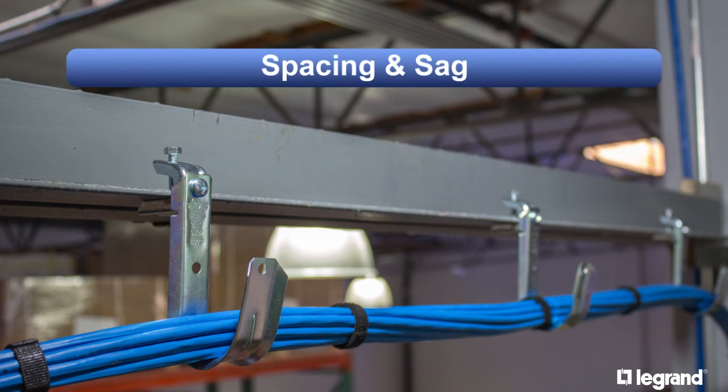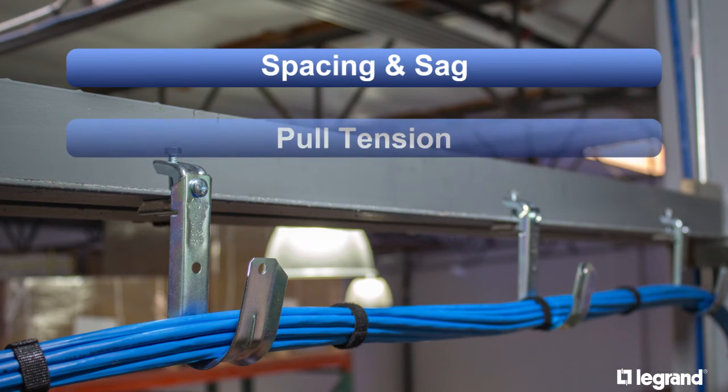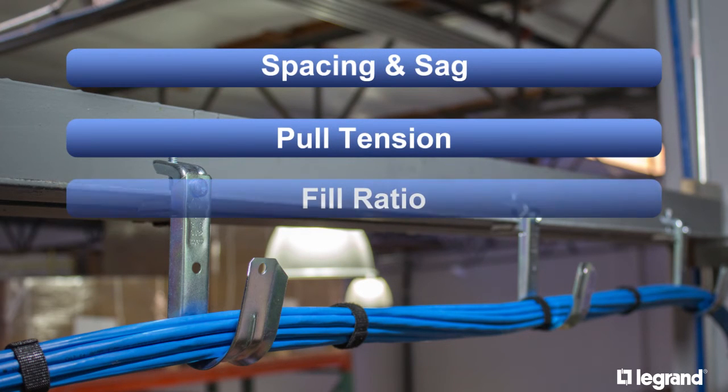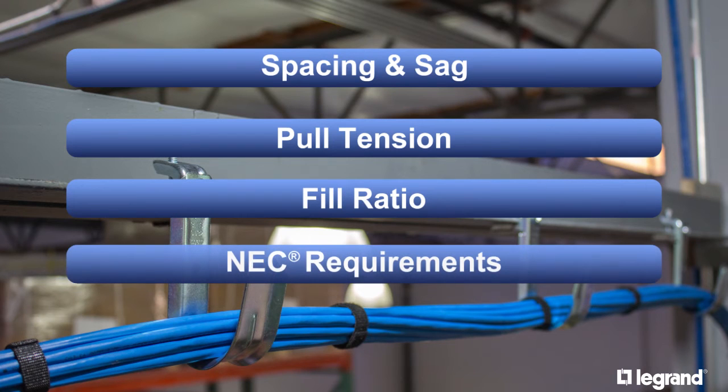The five major guidelines are: spacing and sag, pull tension, fill ratio, NEC requirements, and bend radius.